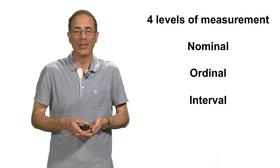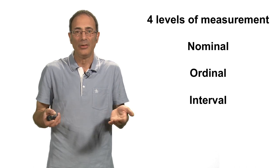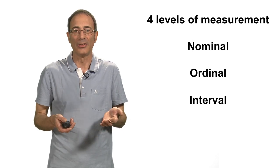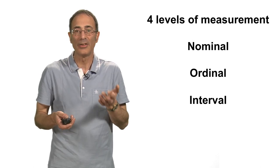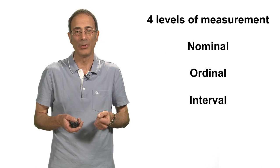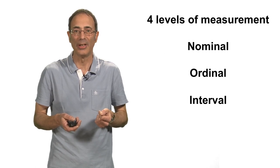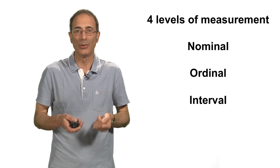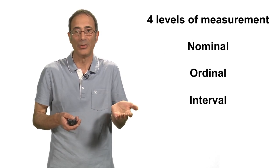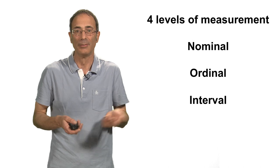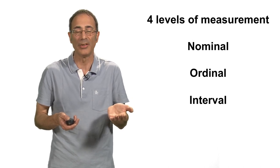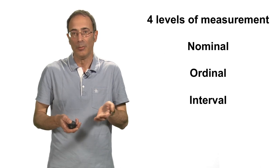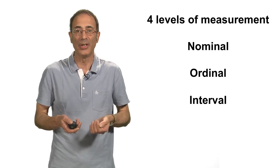Interval level data could be termed putting value in order. And it refers to measurement where there is a consistent, equal, and consistently measurable distance between each point on the measuring scale. However, the zero point is arbitrary, typically something subjectively meaningful to humans. So for example, temperature in Celsius—zero is the freezing point of water. But this isn't the lowest possible temperature.